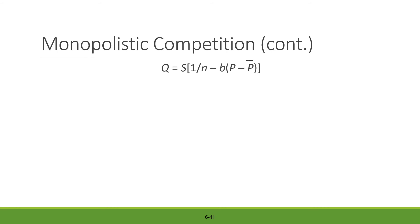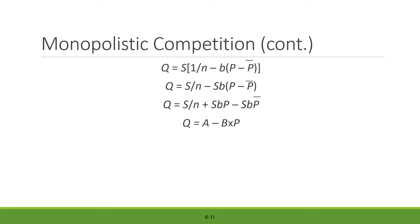Now we relate the earlier equation to the linear demand function. Opening the outer brackets of Q = S[1/n − b(p − p̄)], we get S/n − Sb(p − p̄). Further expanding, we get S/n + Sbp̄ − Sbp. We treat S/n + Sbp̄ as the constant a and Sb as the value of b, which gives us the same linear demand equation Q = a − bp. This is how the two equations are related to each other.